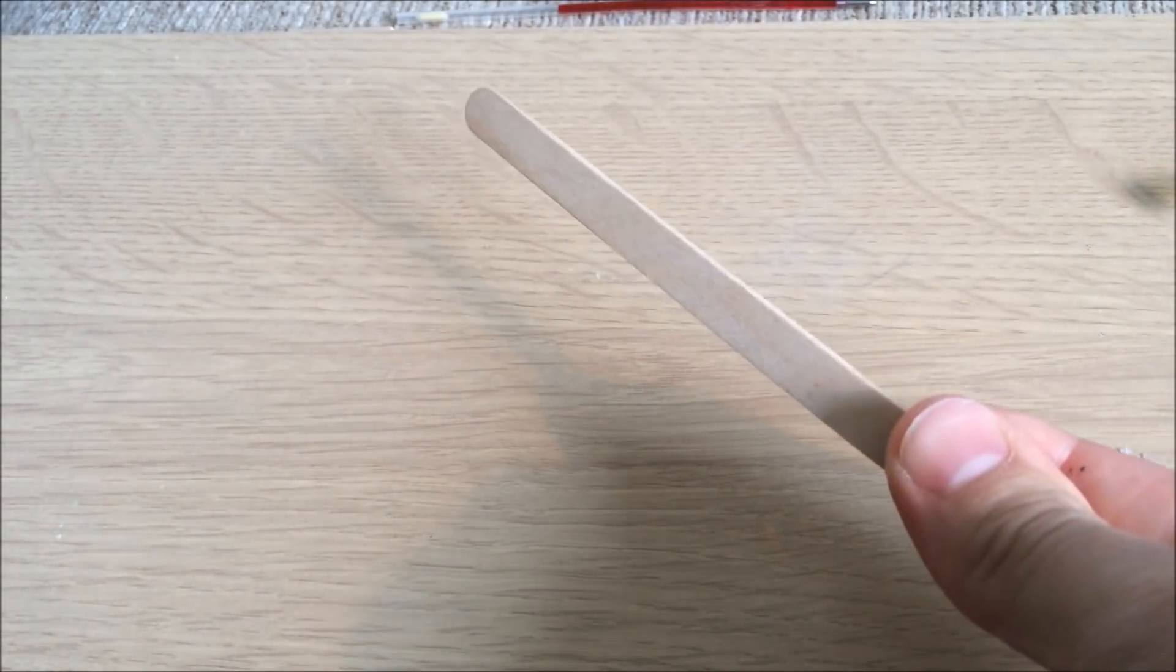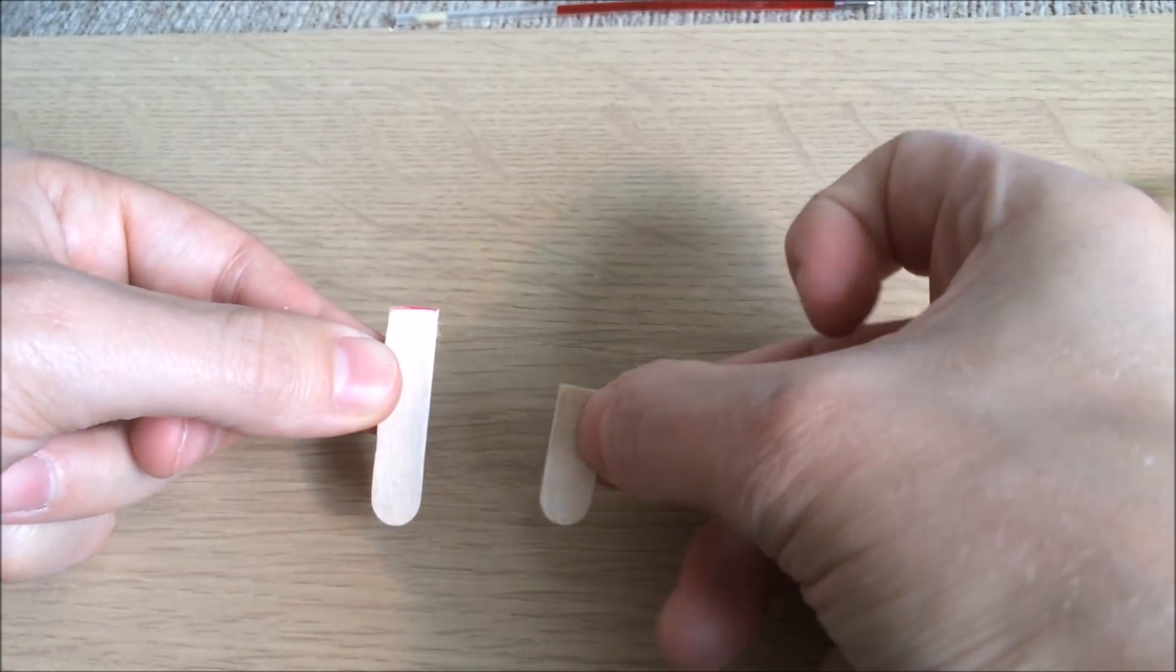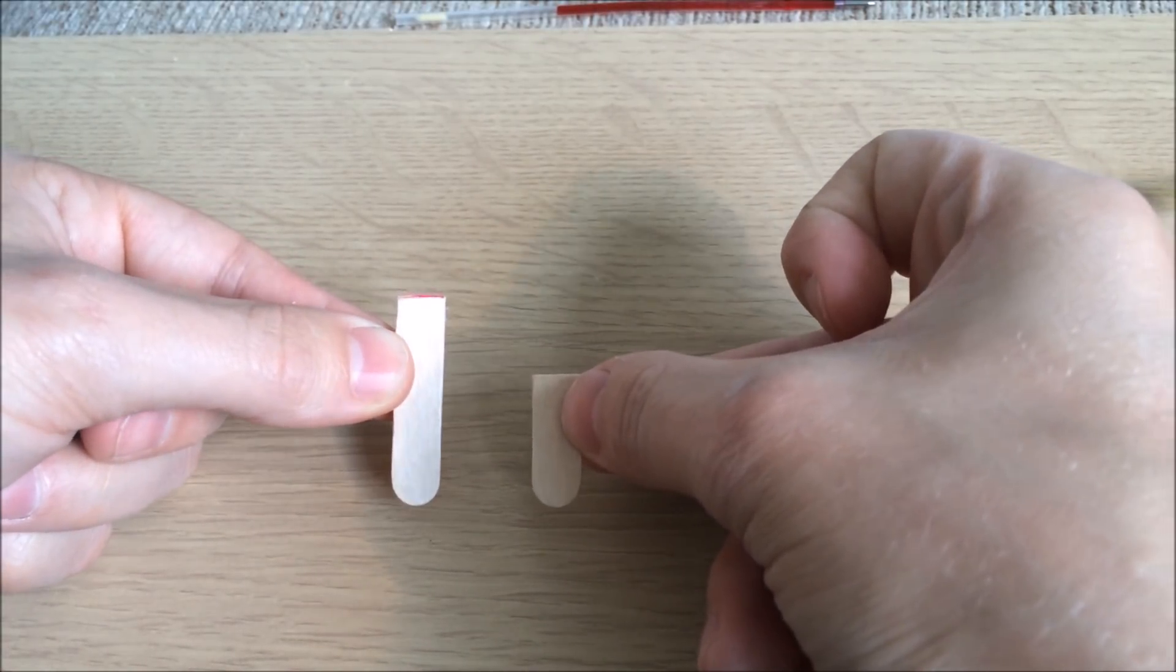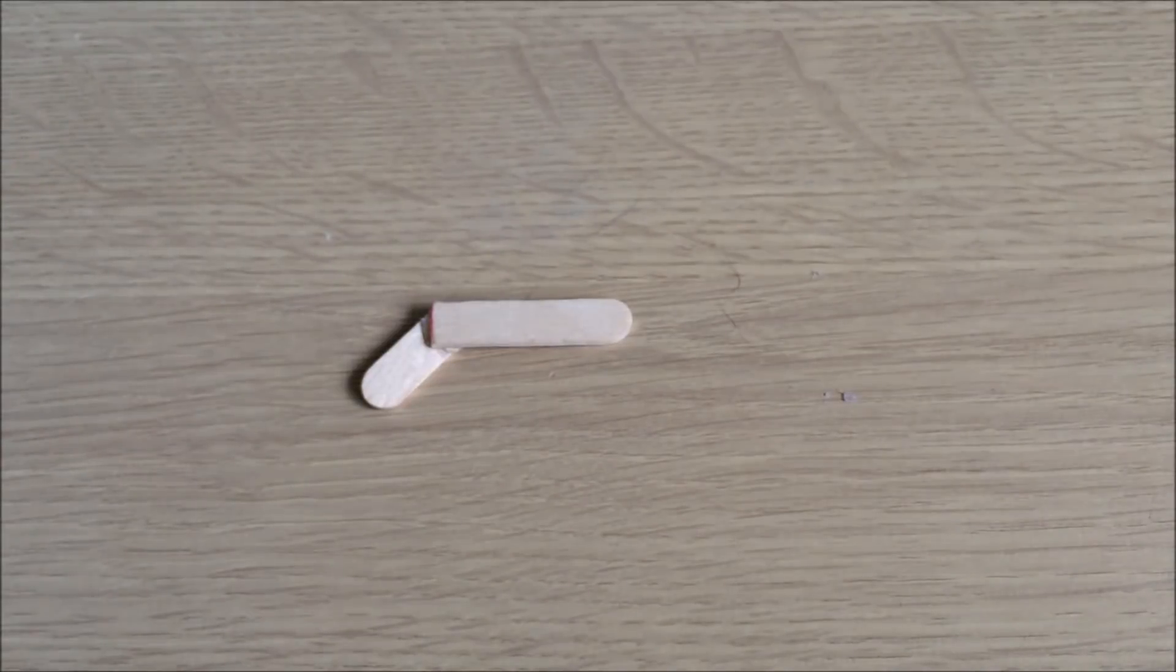After that, use a lolly stick and chop off two ends, one being one and a half inches, the other being one inch. Then you need to glue them together like this to make a gun shape.